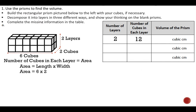So now if I have 12 cubes in each layer and there are two layers, I'm going to do 2 times 12. To find the volume, I take that area of 12 and multiply it by my number of layers, which is my height of 2. Two times 12 is 24 cubic centimeters. We're working with centimeters, so we'll keep going with that.